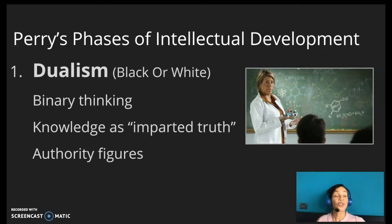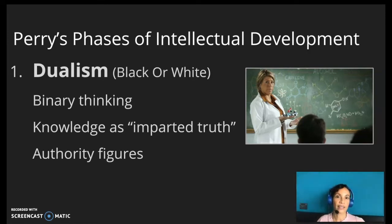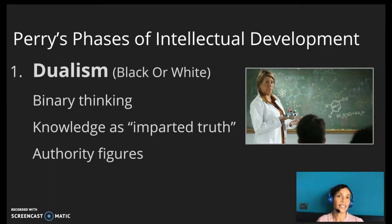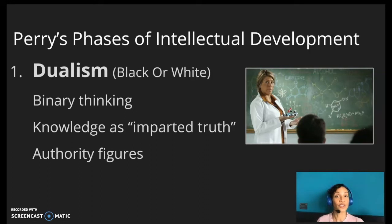Students in dualism spend a great deal of time trying to figure out what the instructor wants and are generally very unsettled by requests to think critically and autonomously. According to Perry, this is an initial phase of intellectual development that mainly freshman college students engage in as passive learners who will hopefully eventually progress towards higher levels of cognitive development where they become more active learners and critical thinkers.